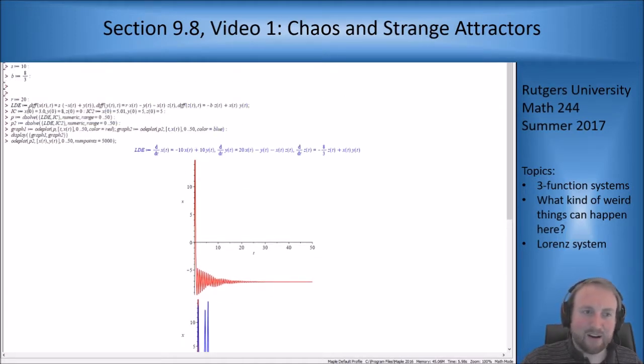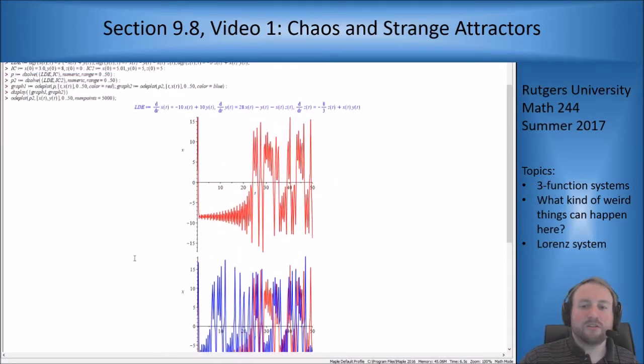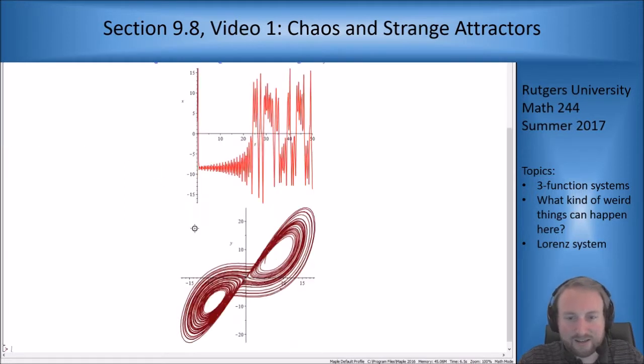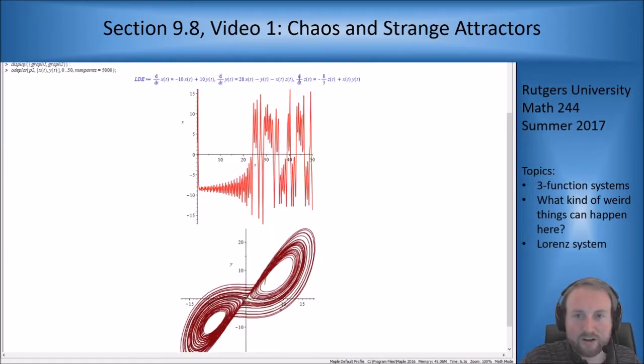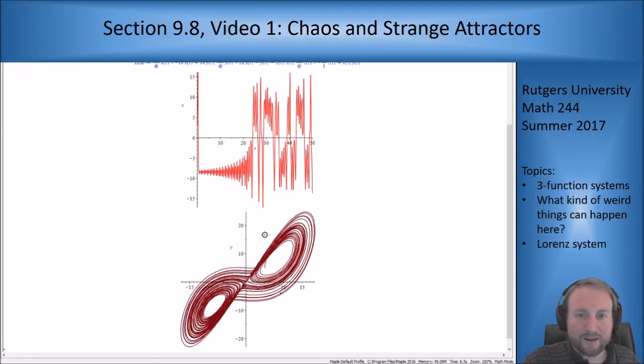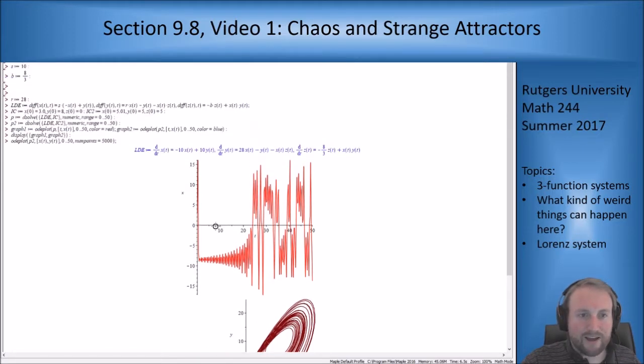But now the big thing is let's make r bigger. Let's make r 28. Now we're in a full-blown chaos setup here where the solution is just chaotic in nature. It's doing random oscillations. It looked like it was going to be stable for a while and then starts oscillating randomly and chaotically, and you get the strange attractor picture that you've seen in the book. Now just to emphasize the point, we're going to do the initial condition again because remember chaotic solutions are super sensitive to initial conditions.